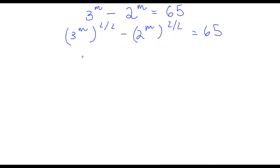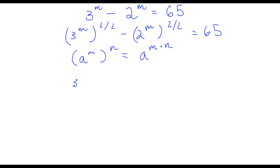Now if we have something in the form a to the power of m to the power of n, this is equal to a to the power of m times n. I'm going to use this exponential property for both 3 to the power of m to the power of 2 over 2, and 2 to the power of m to the power of 2 over 2. So now I have 3 to the power of m times 2 over 2, minus 2 to the power of m times 2 over 2, is equal to 65.